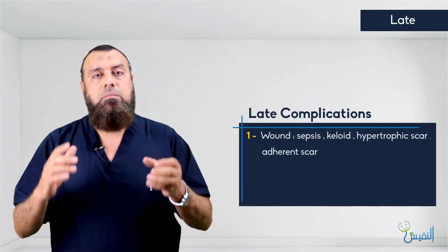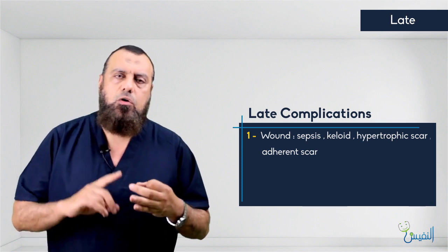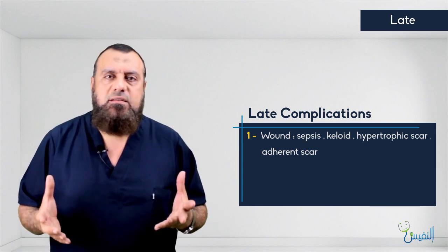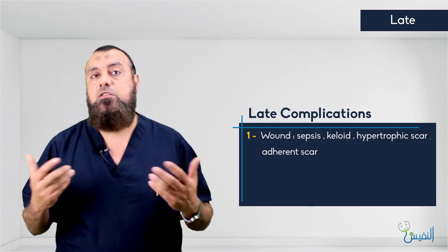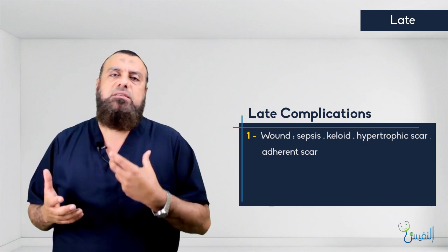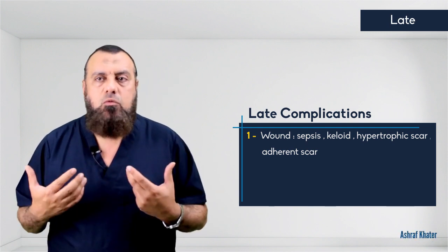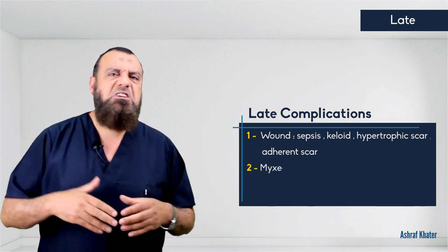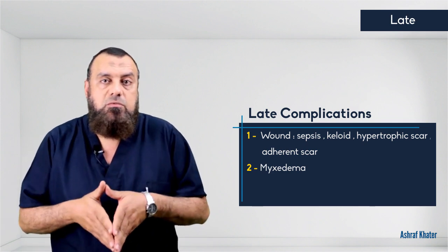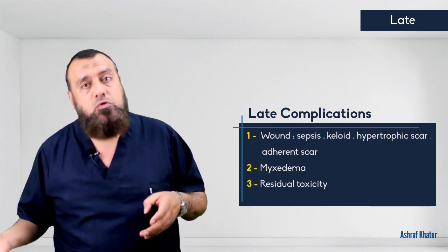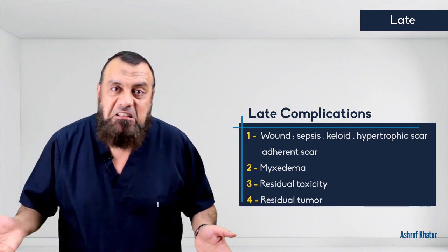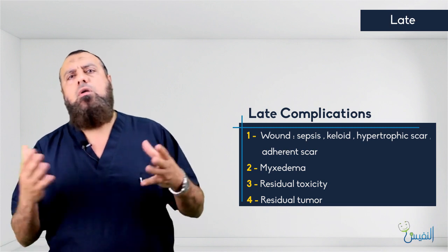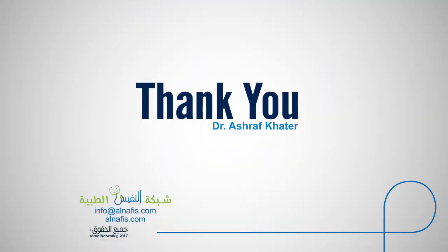The late complications include wound complications such as wound sepsis, hypertrophic or keloid scar, and adherent scar — called a thyroid hood — if the platysma is sutured to the skin, which is terrifying for the patient during swallowing. Myxedema can occur if the patient develops hypothyroidism not corrected by thyroxine. Residual toxicity or residual malignancy may occur if parts are not fully excised during thyroidectomy for malignancy. These are all delayed complications.